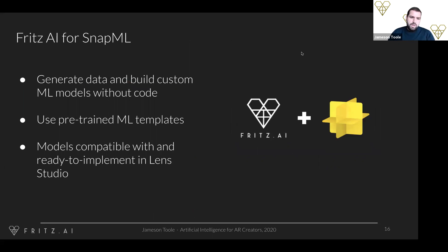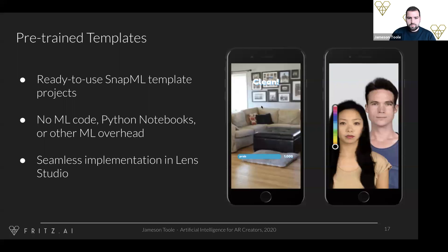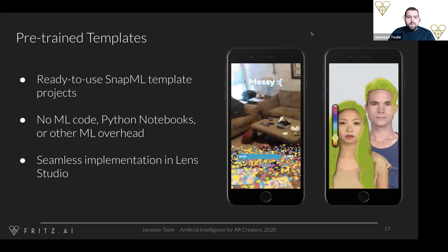I'm really excited to talk about Fritz AI for Snap ML — something we just released in beta. We're really excited about all the possibilities because there are just so many great use cases for combining AI models with lenses and other effects inside Snap. With our platform you'll be able to generate the data you need to train these models and build custom models, all without code. We provide pre-trained ML templates to get you started quickly, and all of the models you train with Fritz AI will be compatible and ready to implement directly in Lens Studio.